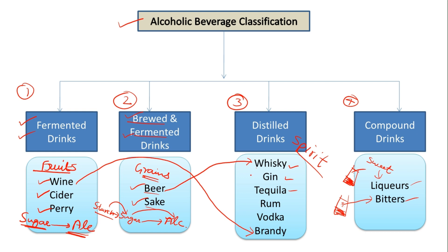If we distill these drinks, we get our third category — distilled drinks — like whiskey, gin, tequila, rum, vodka, and brandy, all made by distillation. And compound drinks are made by taking a distilled drink and adding some type of flavor, whether sweet or bitter, making it either a liqueur or a bitter. Thank you so much — I hope you understand the classification of alcoholic beverages. If you are here for the first time, please subscribe to my channel and share this video with your friends.